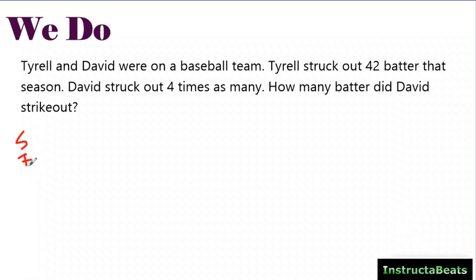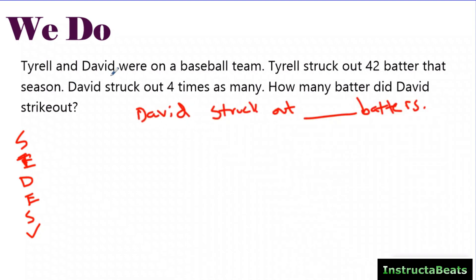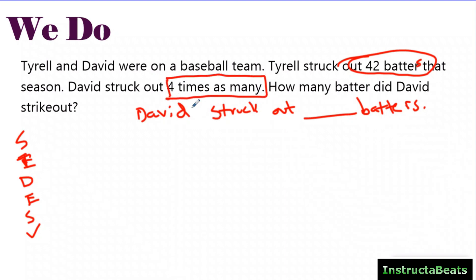Hopefully you just paused it. We're going to do our size-check strategy. The question says: how many batters did David strike out? So my statement is: David struck out blank batters. It says Tyrell and David were on a baseball team. Tyrell struck out 42 batters that season. David struck out four times as many. A lot of times you might see 'times more than' or 'times as much' — all of those signal multiplicative comparison. How many did David strike out?